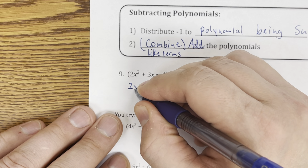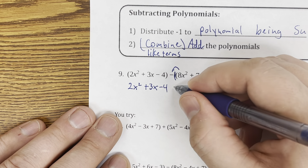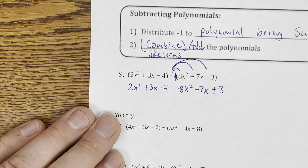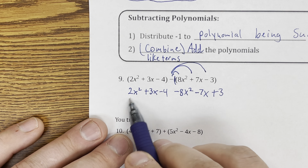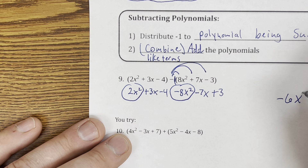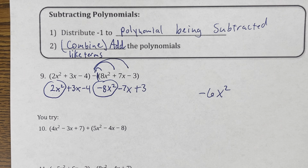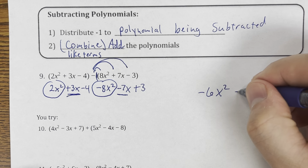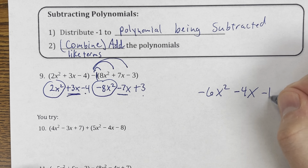So rewrite the first polynomial: 2x squared plus 3x minus 4. Now distribute the negative 1 to the second: negative 8x squared, minus 7x, plus 3. Rewrite it or you will make an error. Now combine like terms: 2x squared and negative 8x squared gives negative 6x squared. Put these in descending order — standard form. Then 3x and negative 7x gives negative 4x. And negative 4 plus 3 is negative 1.